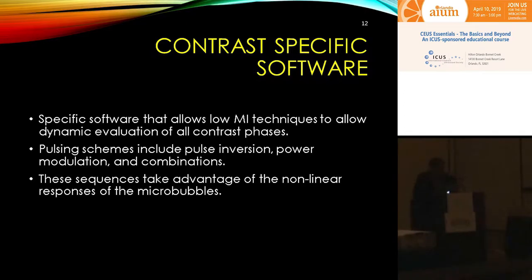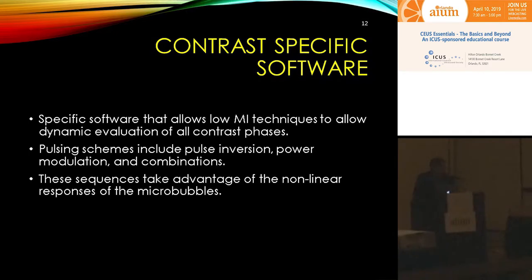Let me briefly go over the technical aspects again. We need contrast-specific software that allows low MI techniques for dynamic evaluation of contrast in all phases. There are pulsing sequences using pulse inversion, pulse modulation, and combinations — you don't have to understand these in depth. Most vendors have one or two different settings. The default setting is usually the best. They may have another setting — sometimes called CHI versus CPS — that may offer a little more resolution but not depth penetration. Start with the default and advance once you feel comfortable.